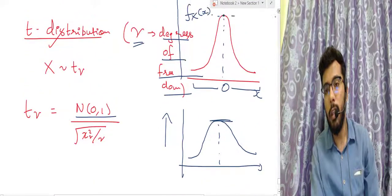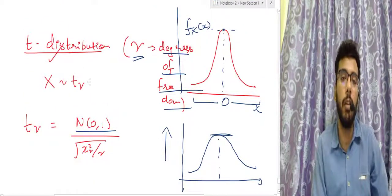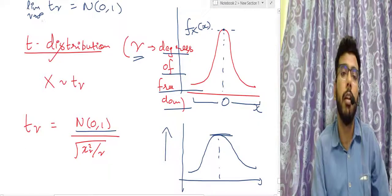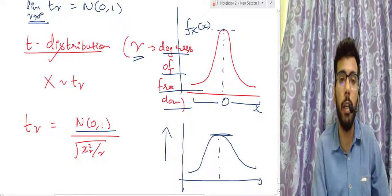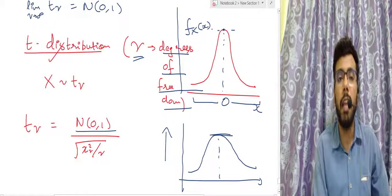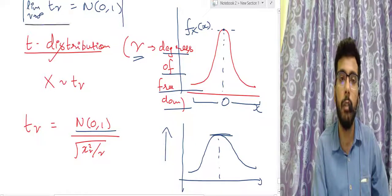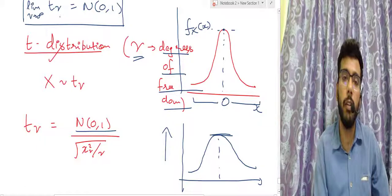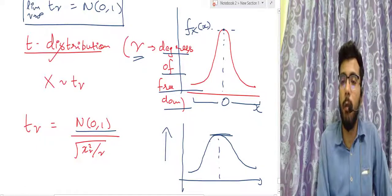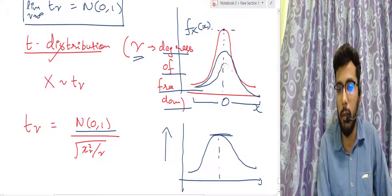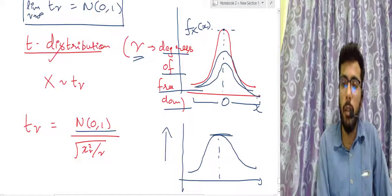One important property: the limiting case of the T distribution is the normal distribution. As ν tends to infinity, T(ν) equals the standard normal distribution. As the degrees of freedom increase, the T distribution becomes flatter and flatter, eventually resembling the normal distribution.